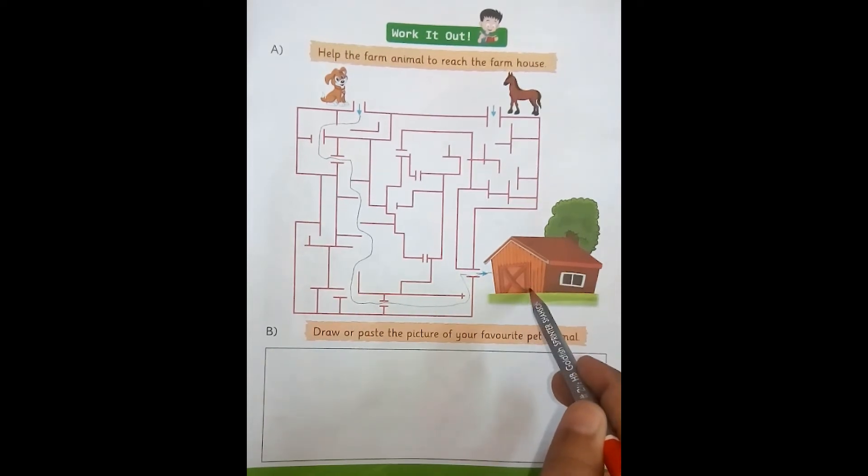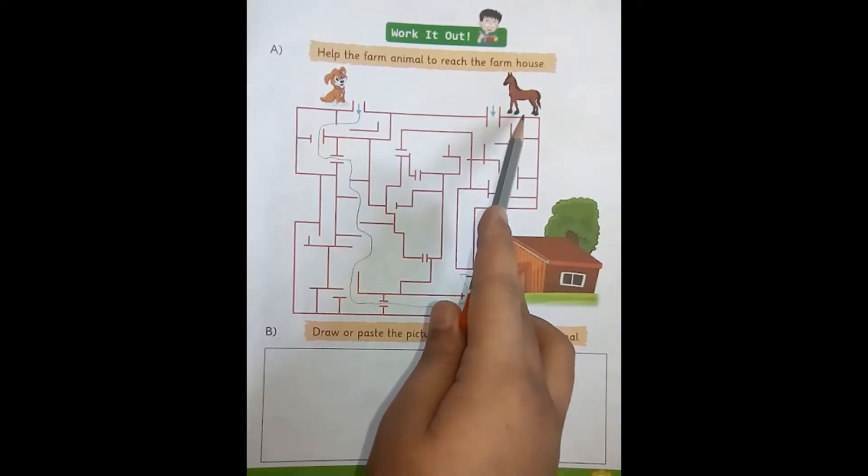Here's the farmhouse. This is a horse. Let's start.